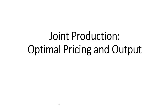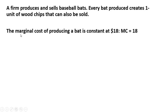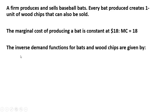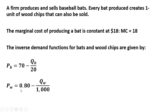In this video we're going to look at joint production, finding the optimal price and output of each good. We have a firm that produces and sells baseball bats. Every bat produced creates one unit of wood chips that can also be sold. The marginal cost of producing a bat is constant at $18, so MC equals 18. The inverse demand functions for bats and wood chips are given — using subscript B for bats and W for wood chips.